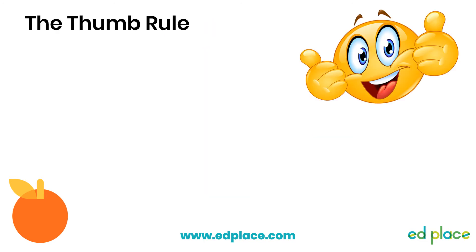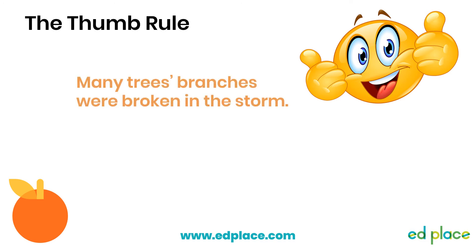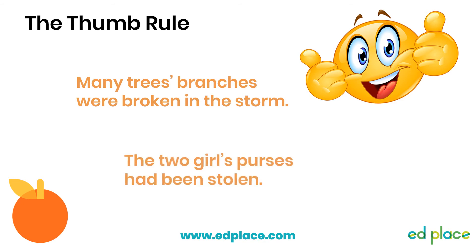Here is a trick that can really help you check that you have put the apostrophe in the right place — the thumb rule. First, cover the apostrophe with your thumb. Does the word before your thumb own what comes next? For example, in this sentence, if I put my thumb on the apostrophe after 'trees', do the trees own the branches? Yes, they do — lots of trees own lots of branches, and that makes sense. But if I put my thumb over the apostrophe in 'girl's', it tells me the purses are owned by one girl, which doesn't make sense when there are two girls. So I need to move my apostrophe to after the S.